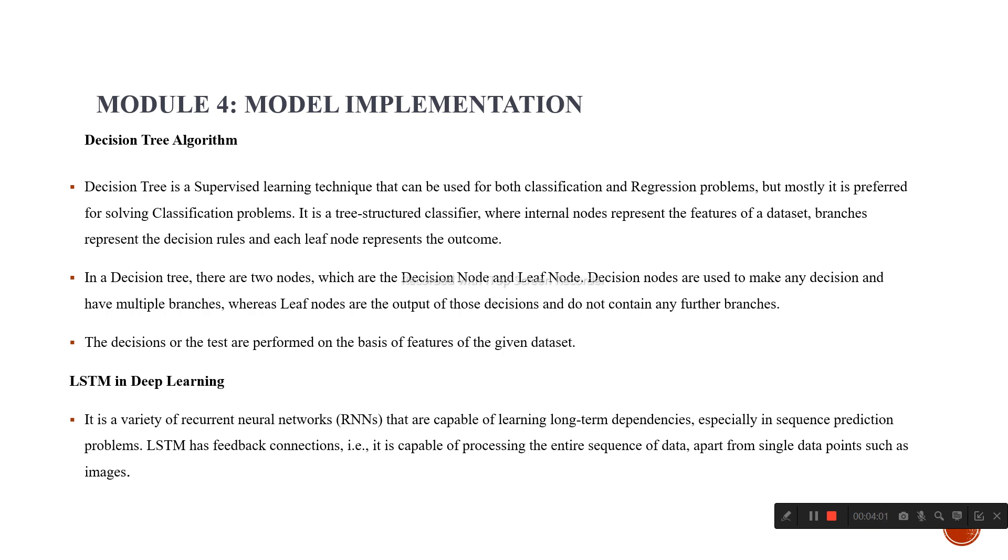Decision nodes are used to make decisions and leaf nodes are used for the output of decisions. LSTM in deep learning is a variety of recurrent neural network that is capable of learning long-term dependencies, especially in sequence prediction problems.